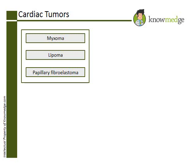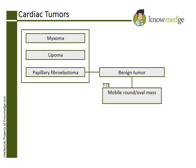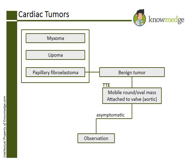Papillary fibroelastomas are benign tumors that often appear round or oval in shape on echocardiogram and are often mobile. They are usually attached to one of the valves, most commonly the aortic valve. Most patients with papillary fibroelastoma are asymptomatic, and the tumor is an incidental finding that can simply be observed and monitored.